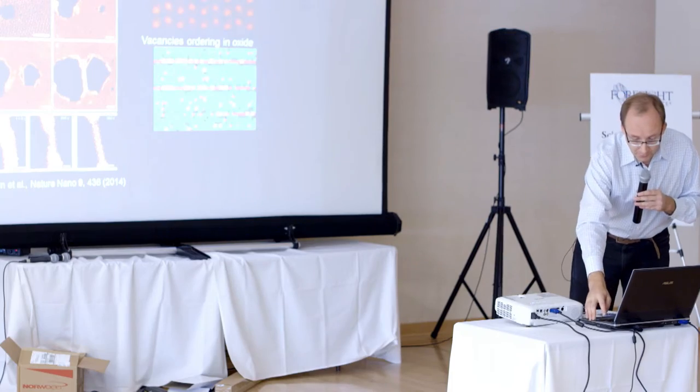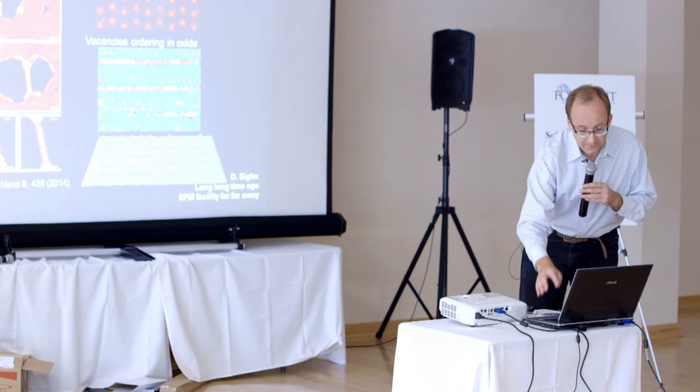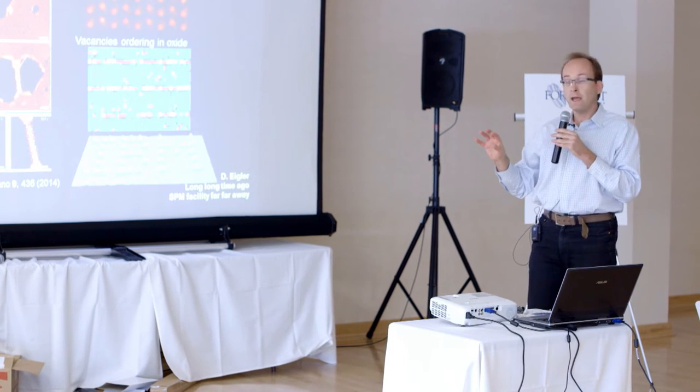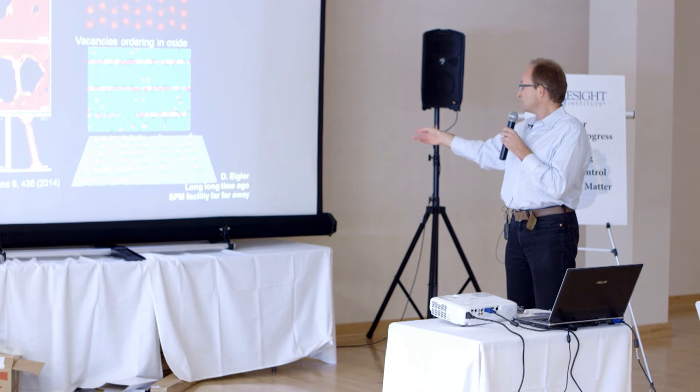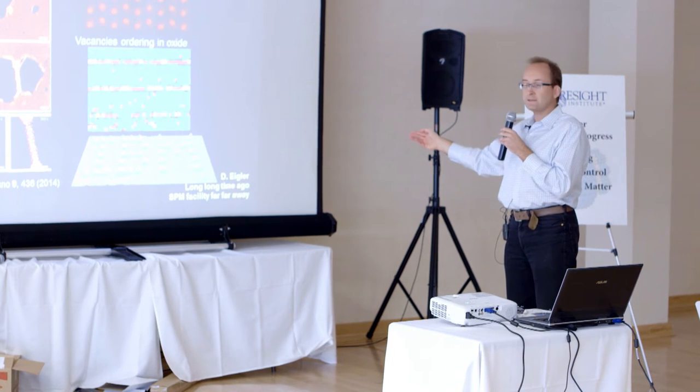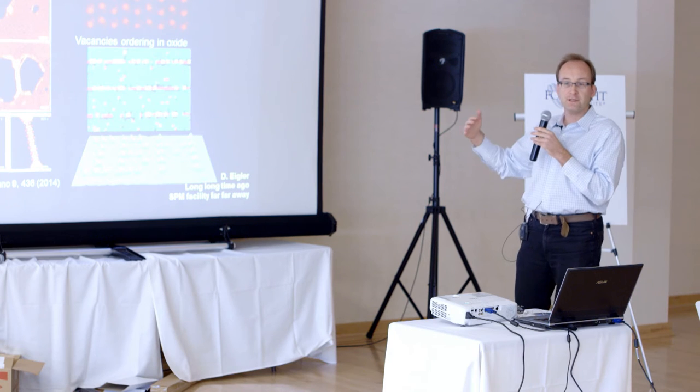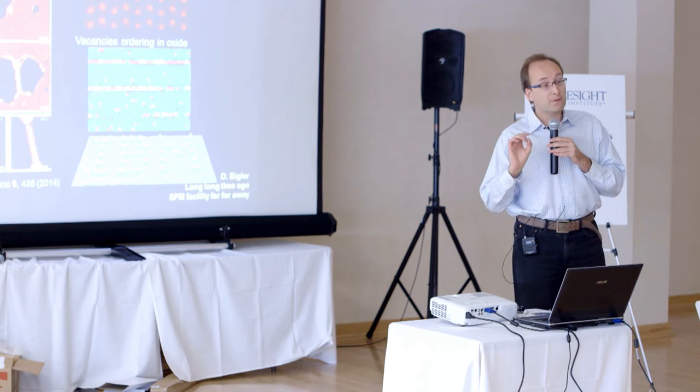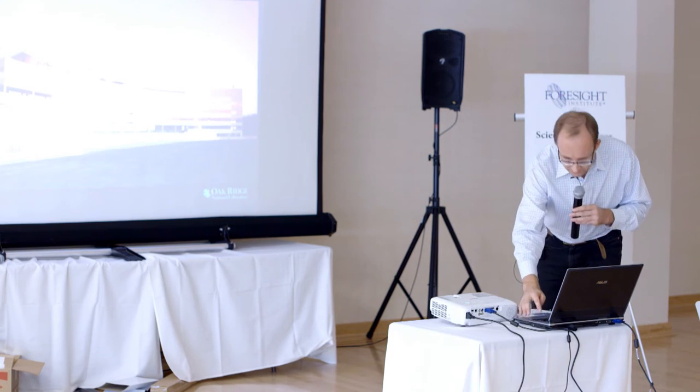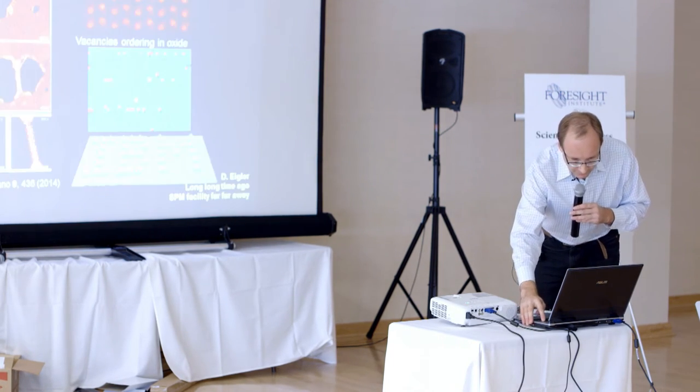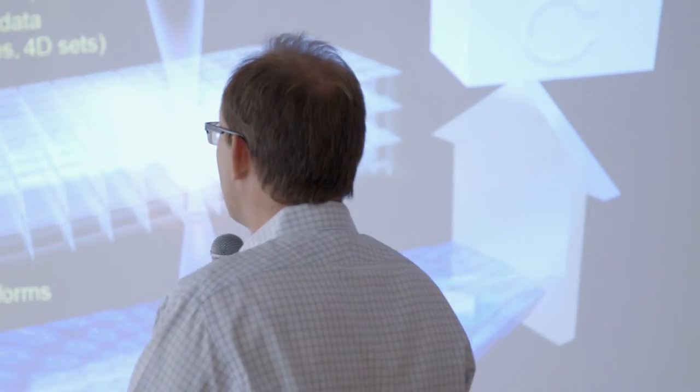Can we take the electron beam control and do the same thing as Don Eigler did 25 years ago? I mean, it's a long time ago and the STM facility is far, far away. It's far away from Oak Ridge. Here it's actually very close. And do the same thing, but in the bulk, not on the surface. And this is the whole idea. Oops, this is the wrong place. And this is the whole idea of the atomic forge. So what if we use the electron microscope, not as an observational tool, but the tool to control matter.